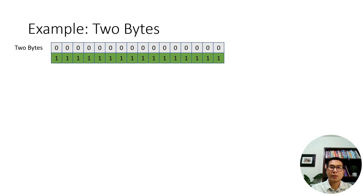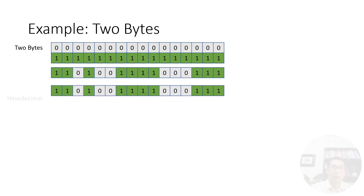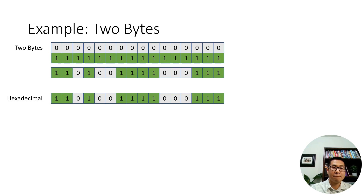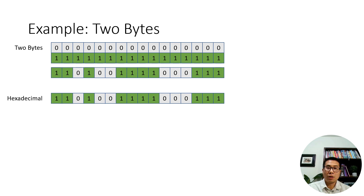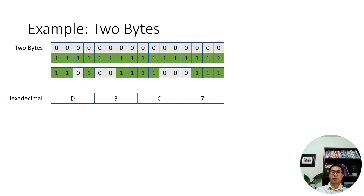Now let's look at an example with two bytes. We have a 16-bit binary string which is converted into hexadecimal letters for easier human computation. The first group of four bits represents the letter B, the second group represents 3, the third group represents C in hexadecimal, and the fourth group represents 7 in hexadecimal.